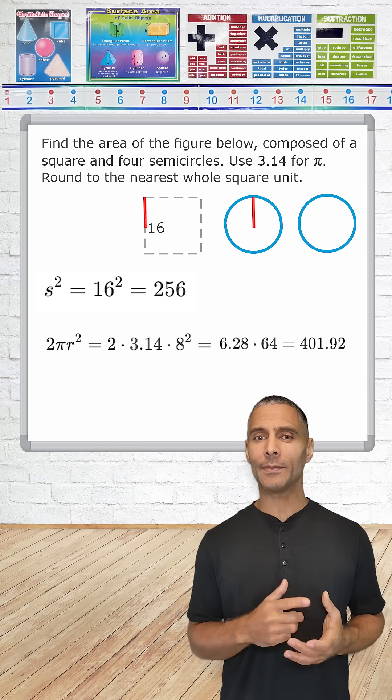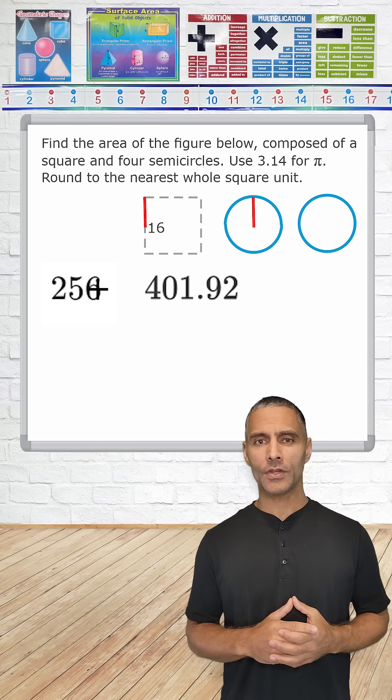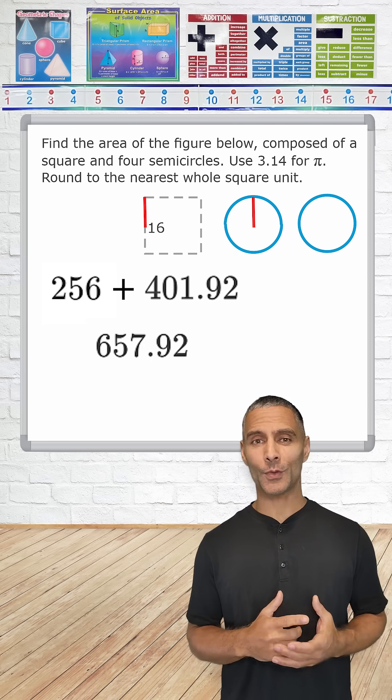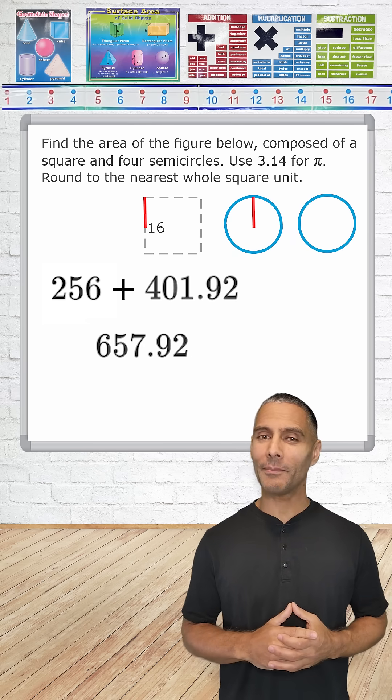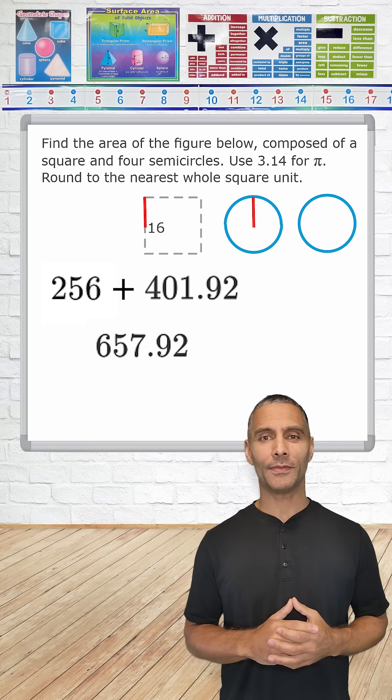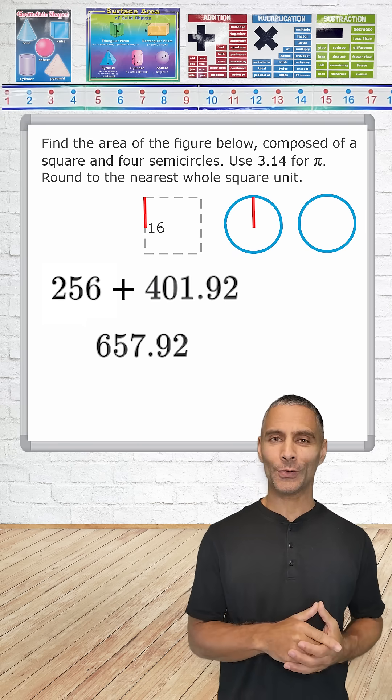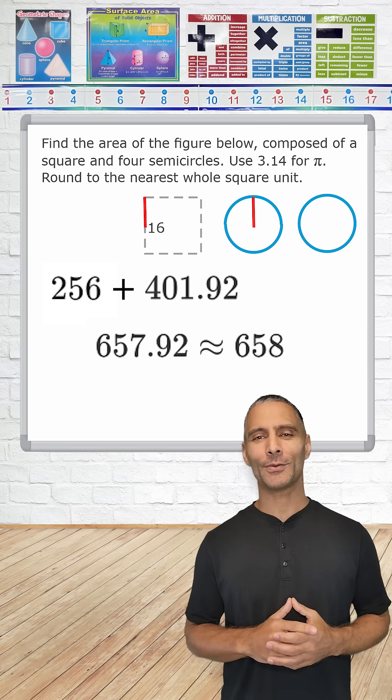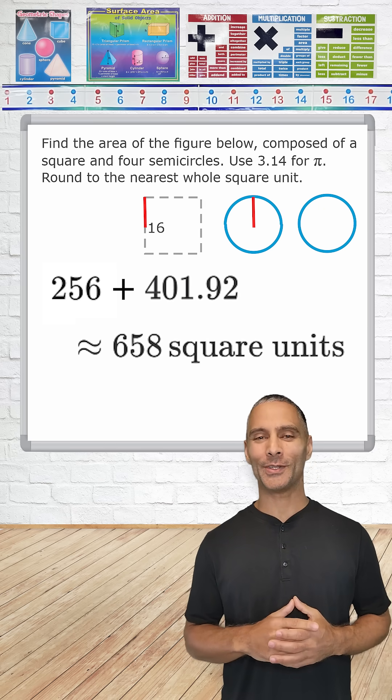Now that we have both areas, we simply add them together. So we have a total area of 657.92 square units. Now remember the problem asks us to round to the nearest whole squared unit. And 657.92 is closer to 658 than 657. So our final answer is 658 square units.